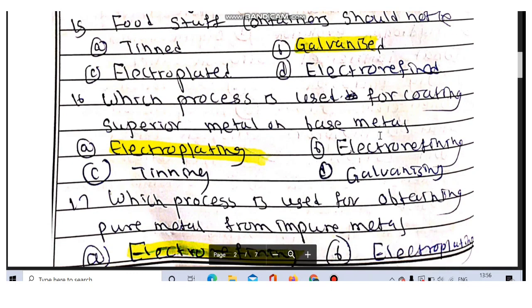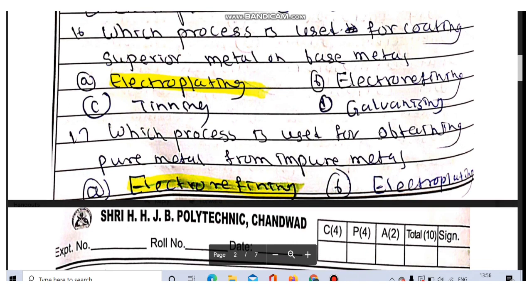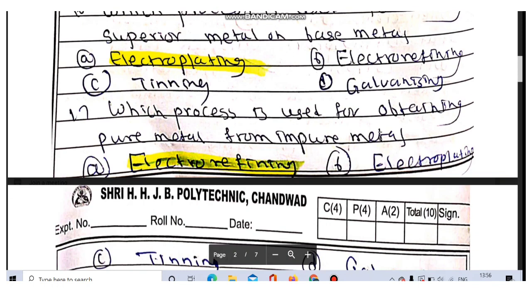Which process is used for coating superior metal on base metal? Electroplating method is used for coating superior metal on base metal. Which process is used for obtaining pure metal from impure metal? Electro-refining is used for obtaining pure metal.